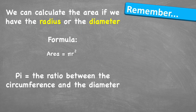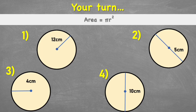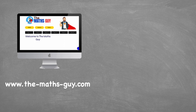To summarize: we can calculate the area of any circle if we have either the radius or the diameter. The radius can be used directly, but the diameter must be halved to give the radius first. The formula for area is πr², and pi is the ratio between the circumference and the diameter. Here are four questions to try — put your answers in the comments. Hopefully this video has been helpful; thanks for watching!